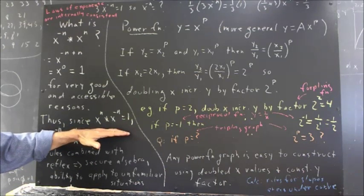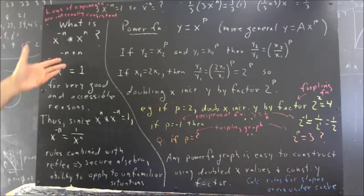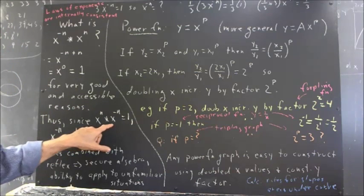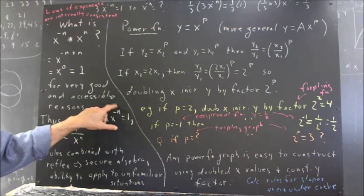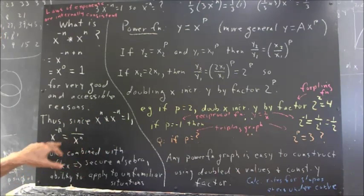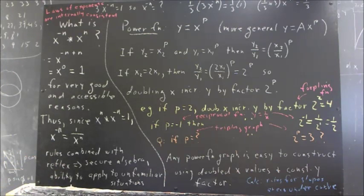But what we do is we divide both sides by x to the n, or multiply both sides by the reciprocal of x to the n. And in that context it should be very clear to you that x to the negative n would then be one divided by x to the n. And there is one of your laws of exponents nobody seemed to be aware of.